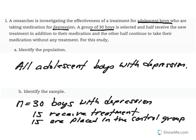As indicated here, n is equal to 30. Recall that lowercase n denotes the size of a sample, while capital N denotes the size of a population. The population size was not given, so it is not included. We know that the sample size is equal to 30 boys with depression, with 15 allocated to receive treatment and 15 placed in the control group, as they will not receive treatment.